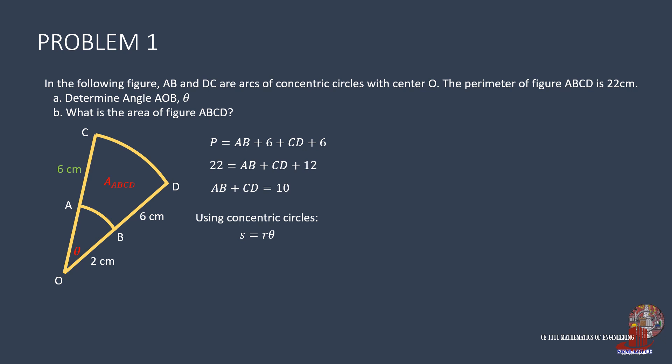Using the equation arc = radius times central angle, we can say arc AB is 2 theta and arc CD is 8 theta. Plugging these two arc equivalents into the perimeter equation: 2 theta plus 8 theta equals 10. This simplifies as 10 theta equals 10, where theta, the central angle, is solved as 1 radian. This is angle AOB.